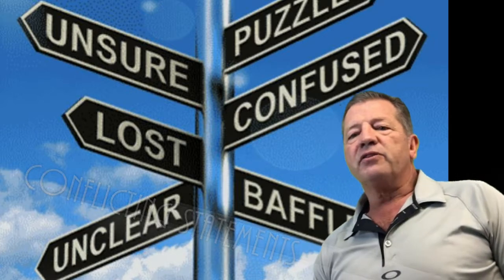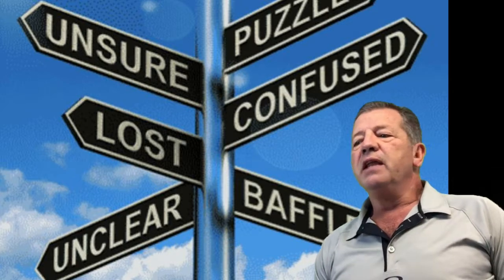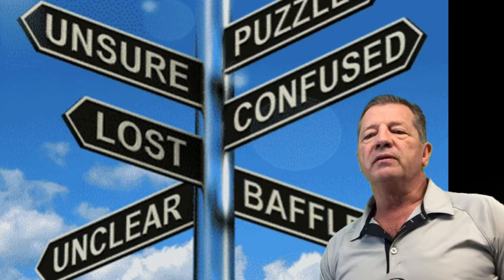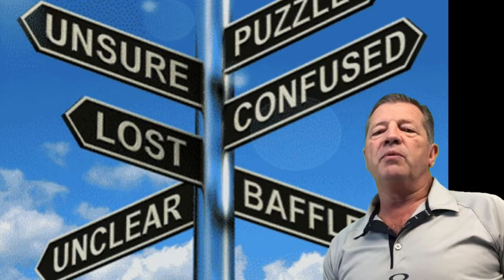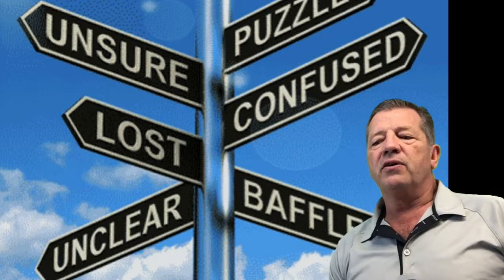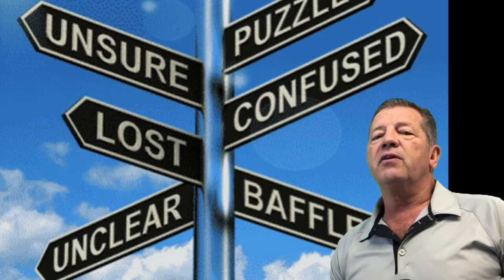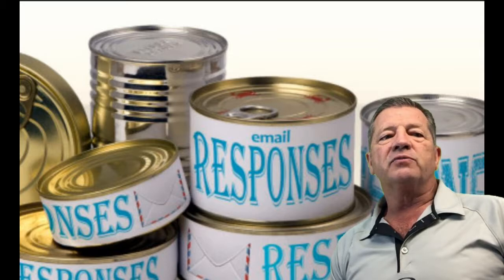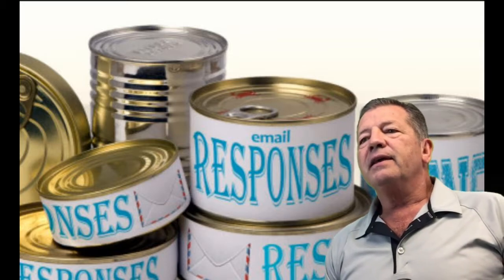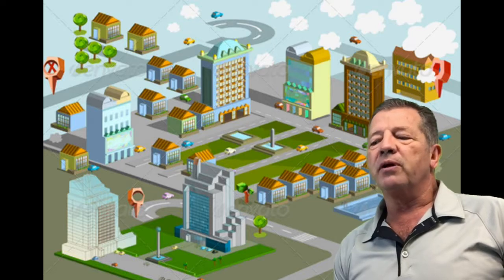For example, often times an appraiser has a trainee that has assisted in the preparation of the appraisal and the appraiser did not make an interior inspection of the property. However, the pre-printed form requires that the appraiser signing the report make the interior and exterior inspection of the subject property and an exterior inspection of the comparable sales. The appraiser then adds a comment saying they really didn't do that, which tends to be a violation of USPAP because it creates a misleading appraisal.